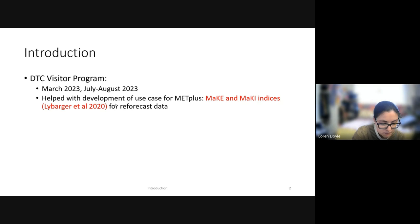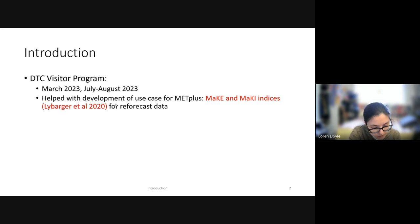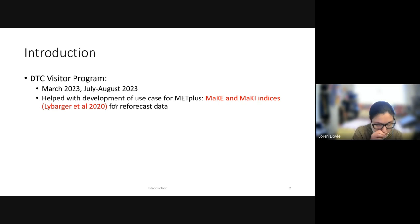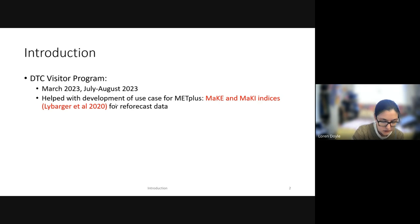The MEC and MECI indices are a set of metrics for El Niño event prediction and MJO influence, designed by Nick Liebarger, that quantify the MJO-ENSO relationship. To provide some background, I will briefly introduce the MJO and ENSO relationship and how the indices work.